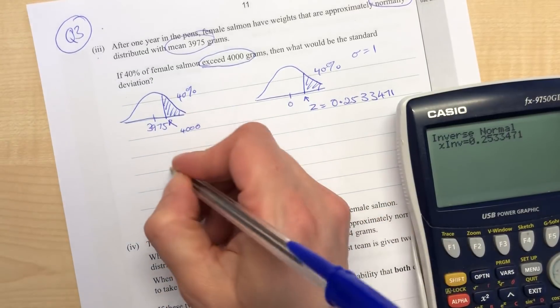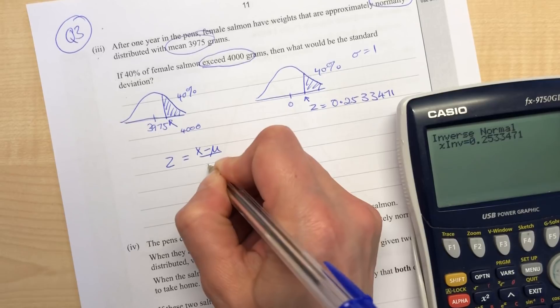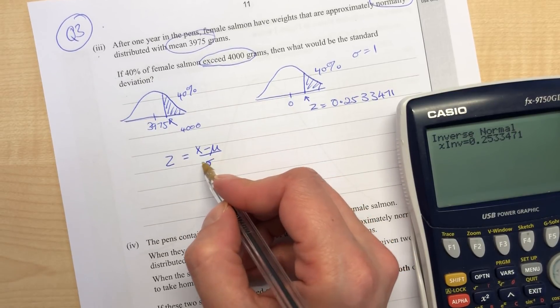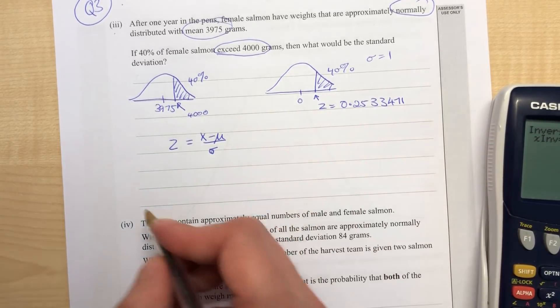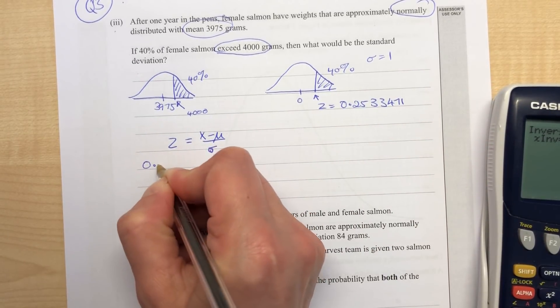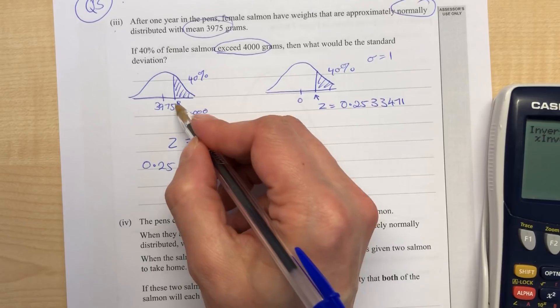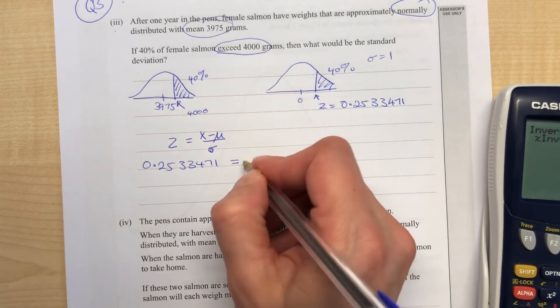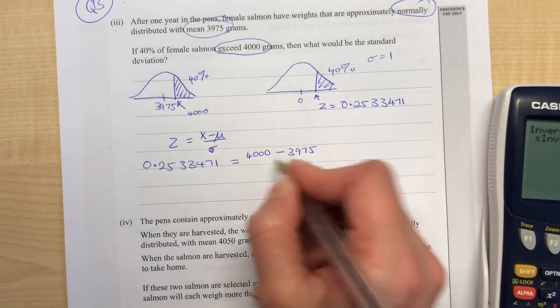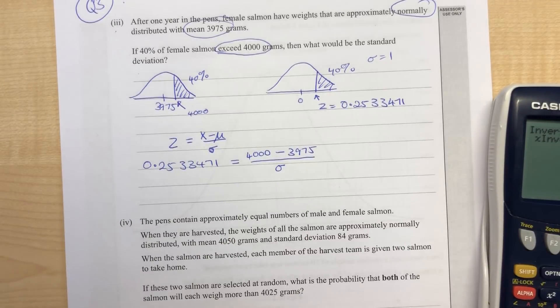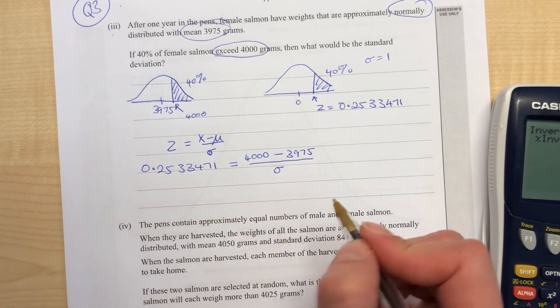Then we match up the z with x using this formula: z = (x - mean) / sigma. So 0.2533471 equals (4000 - 3975) / sigma, and sigma is the thing that we're trying to work out.